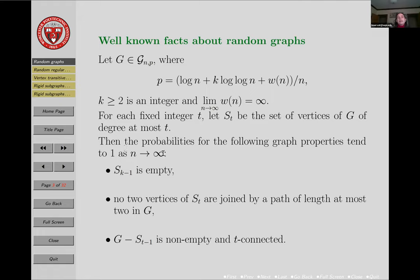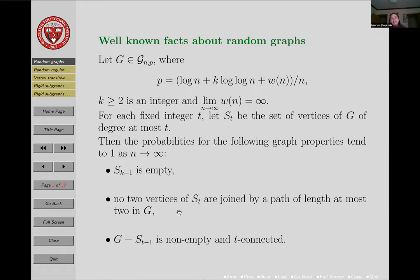Then as n tends to infinity, you can say something about these probabilities: namely, S_{k-1} will be empty. No two vertices of S_t—those are the vertices of your random graph G that have degree at most t—are joined by a path of length less than or equal to 2. They are far apart.